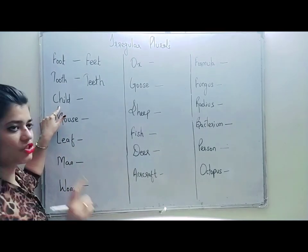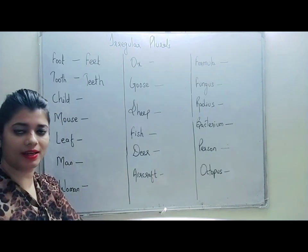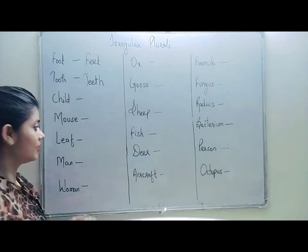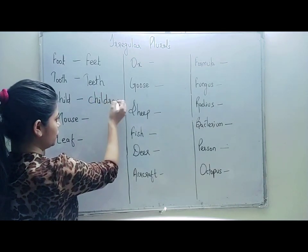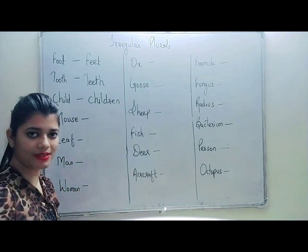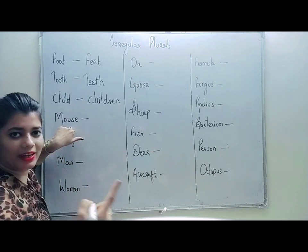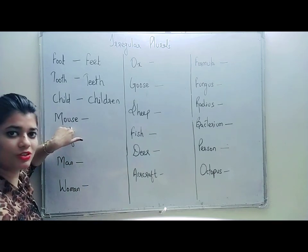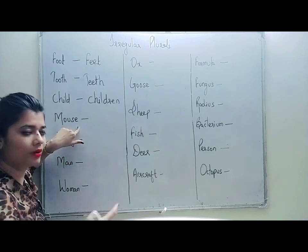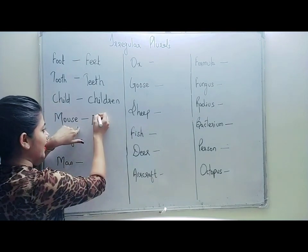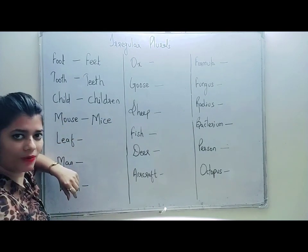My next word is child. If one child is there, you say child. But if more than one is there, you will say children. The plural form of child is children. My next word is mouse, which belongs to the species of rats. The plural of mouse will not be mouses — it will be mice, M-I-C-E.